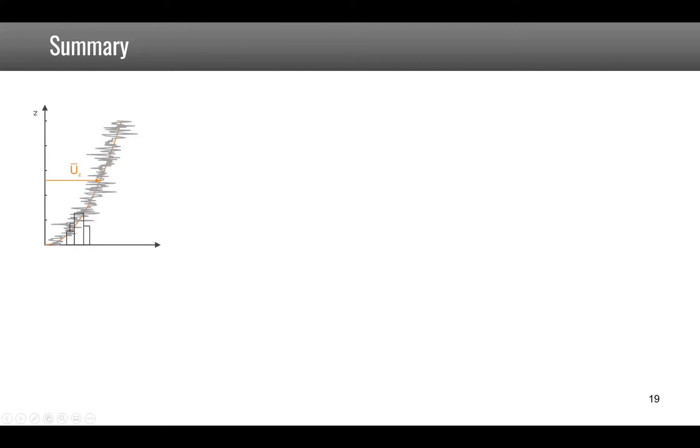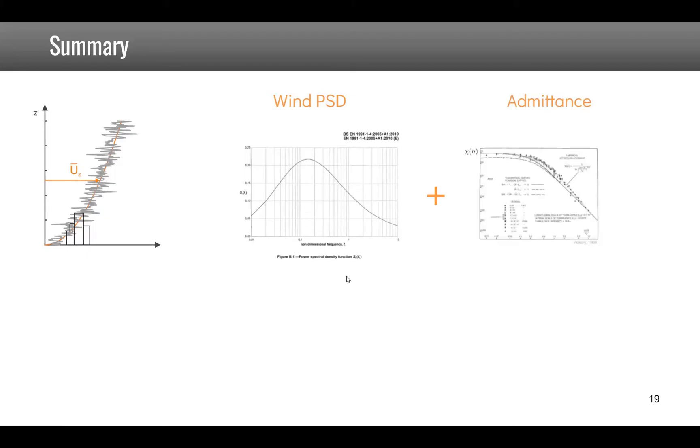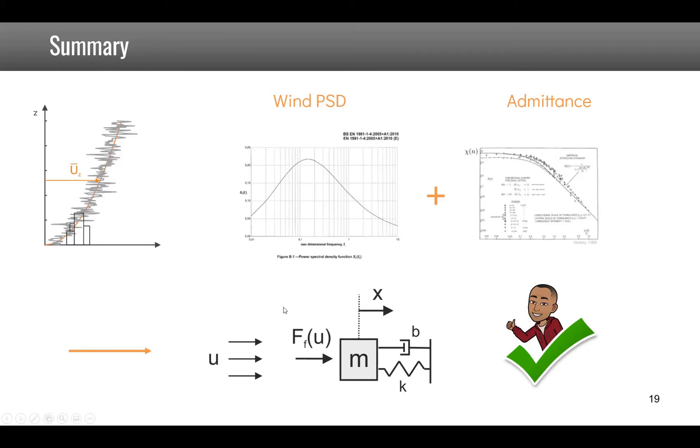To summarize, the wind velocity profile is given by a constant term plus a turbulent one. In order to compute the response to wind, we have to rely on a description of the wind by a power spectral density like the Davenport or other models. We also have to rely on the admittance to take into account the size effect with respect to the turbulence. When we have all that, we can then go to a model where we have the force, an equivalent dynamic force applied to a vibrating body and compute its response.